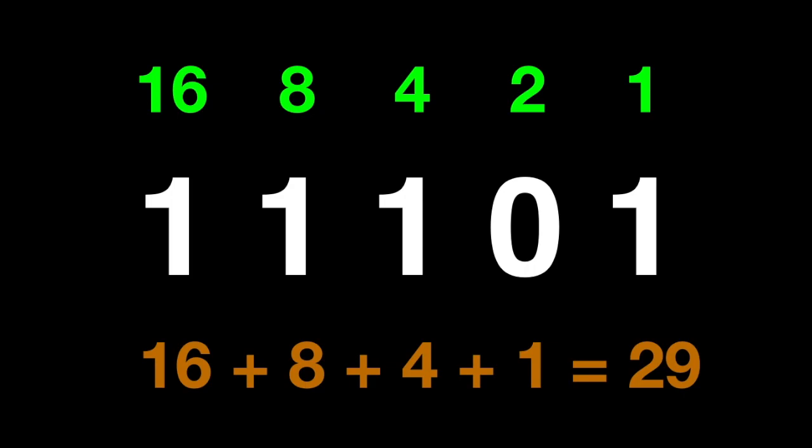If I read this I get one lot of 16 plus one lot of 8 plus one lot of 4 plus one lot of 1, which gives me 29. So I would be remembering those first five coin flips as the base 10 number 29.